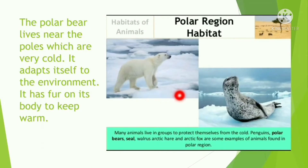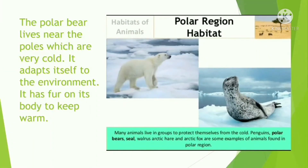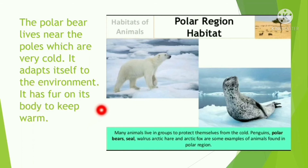The polar bear lives near the poles, which are very cold, so it adapts itself to the environment. Adaptation is a special skill which helps an animal to survive and do everything it needs to do. The polar bear needs a thick coat or thick layer of fur to keep its body warm in order to survive in the freezing cold.